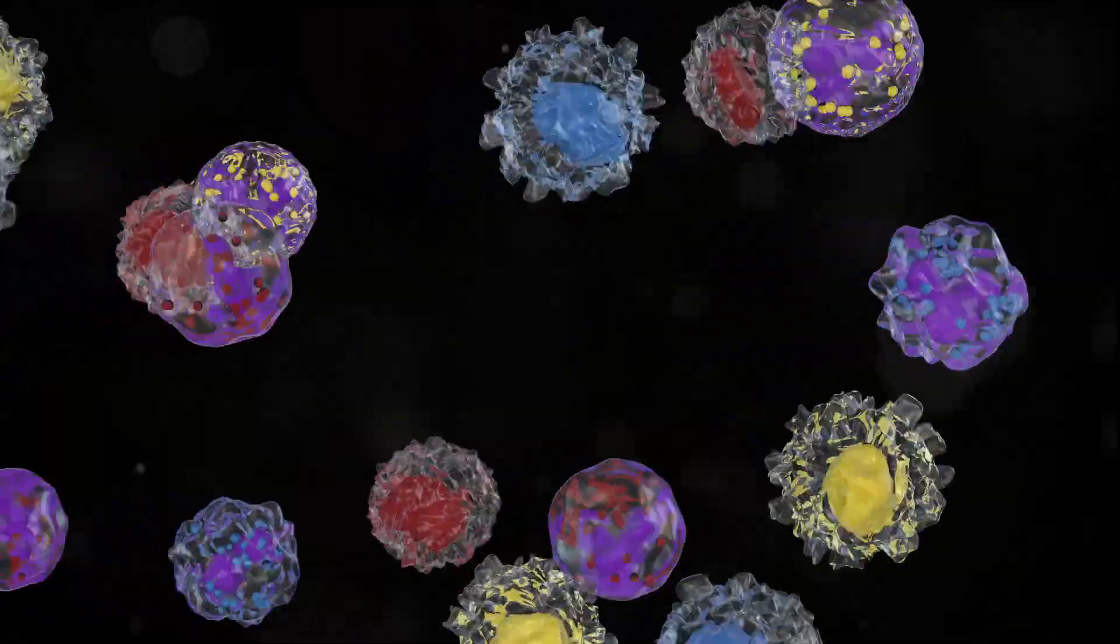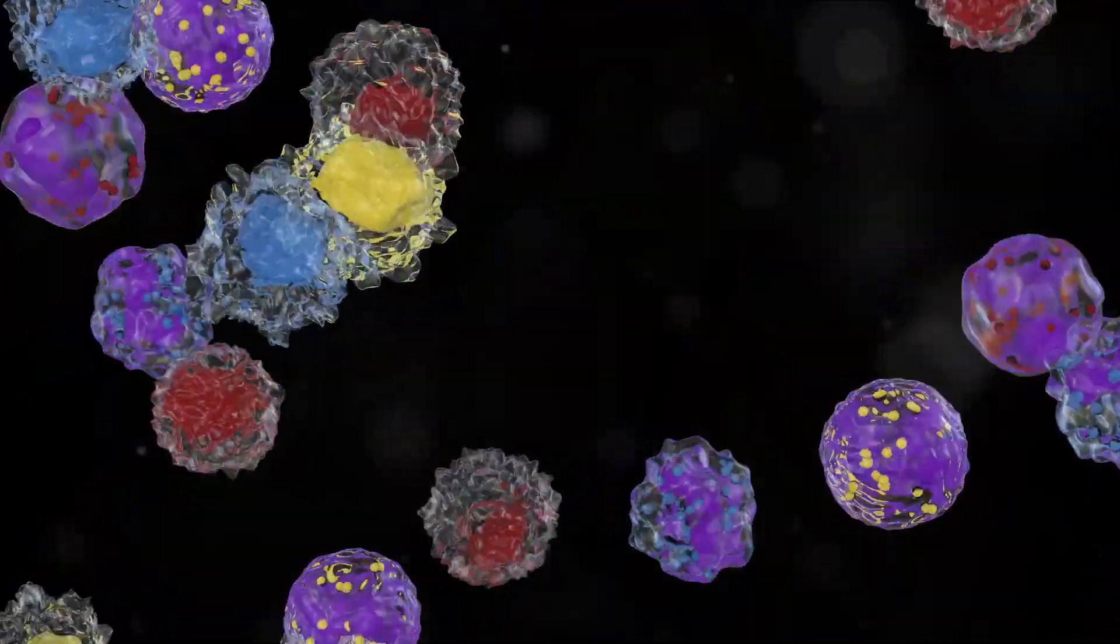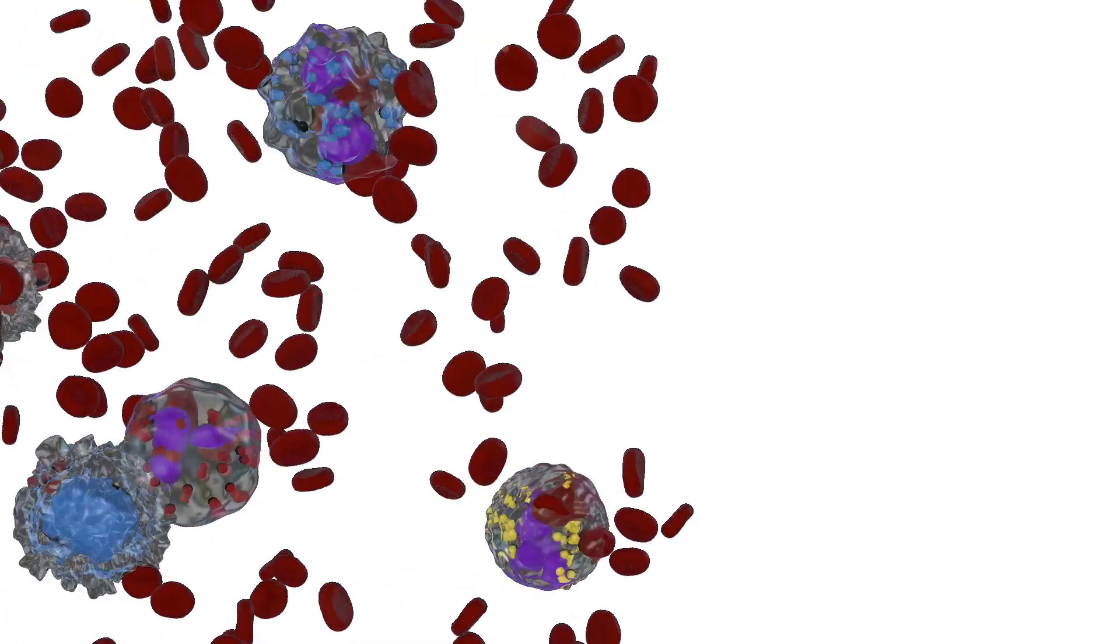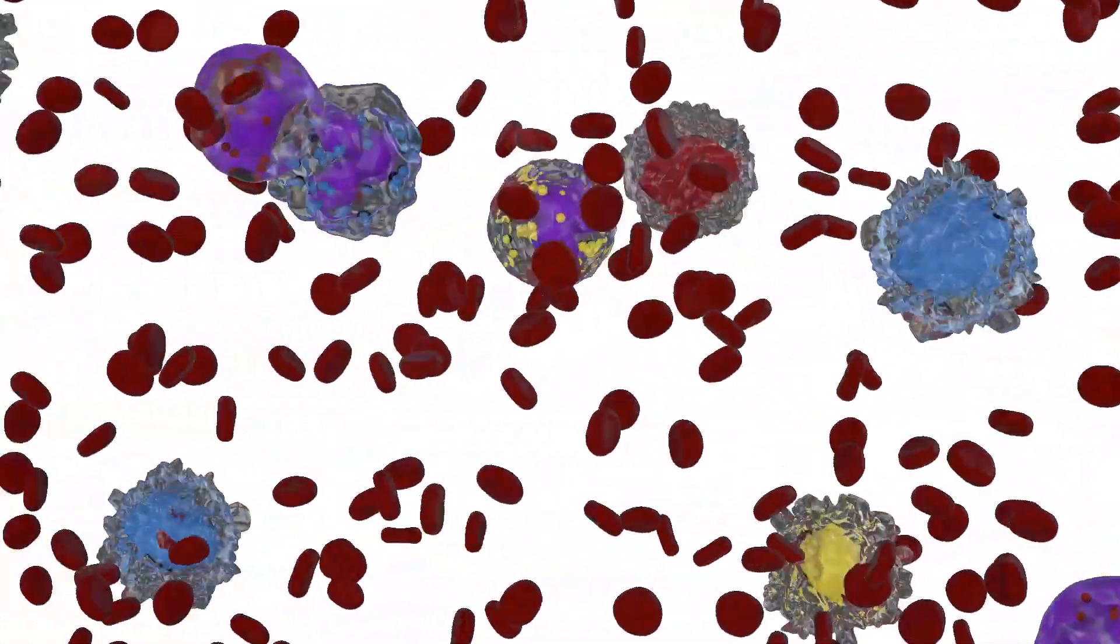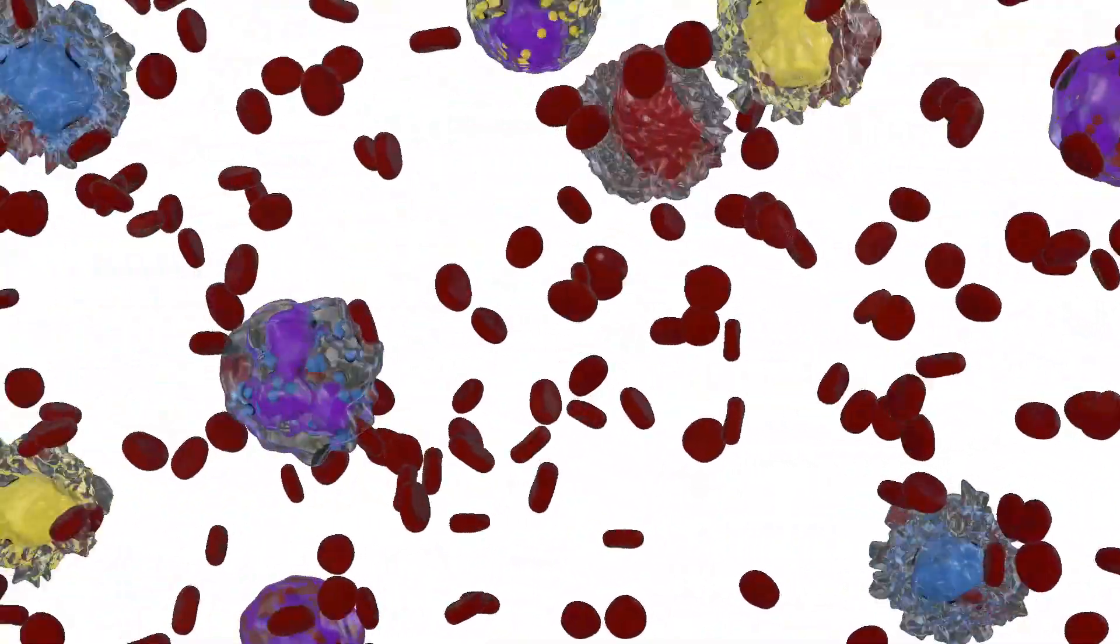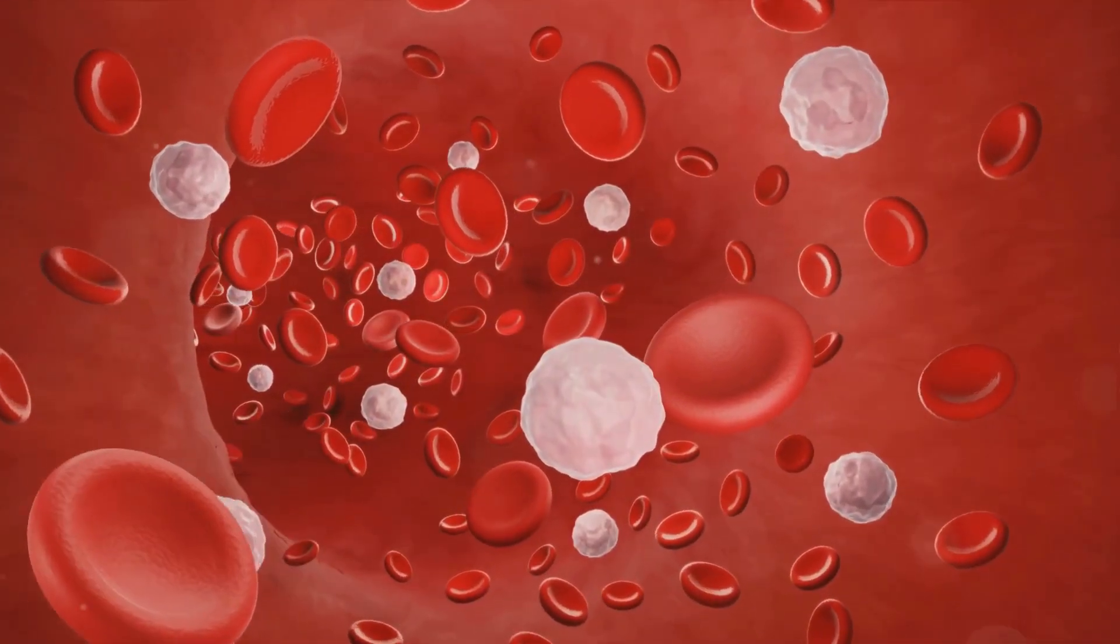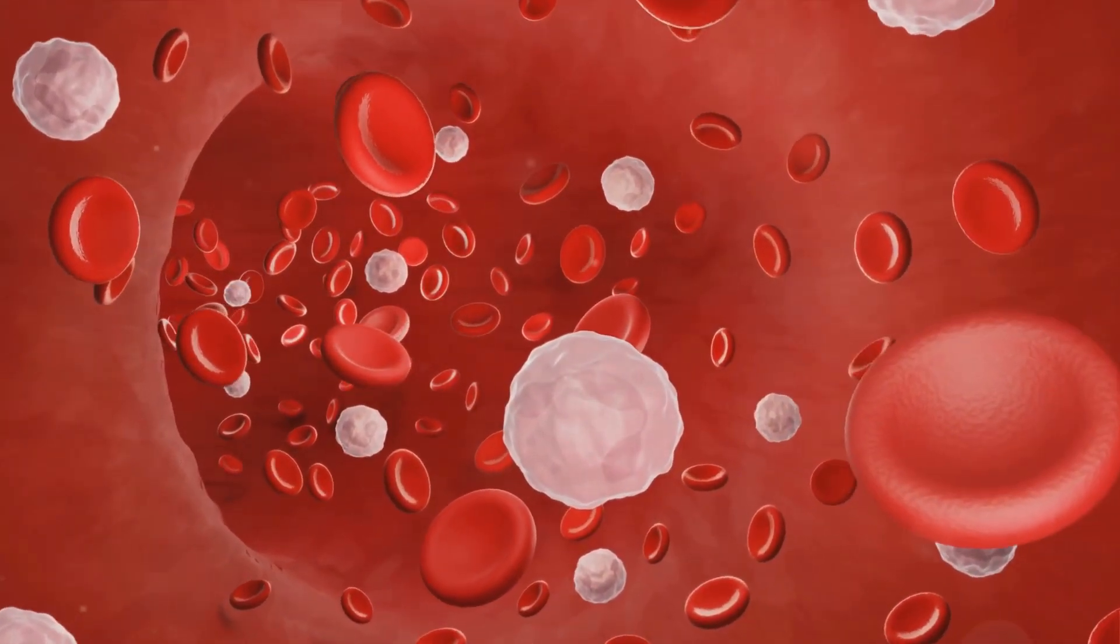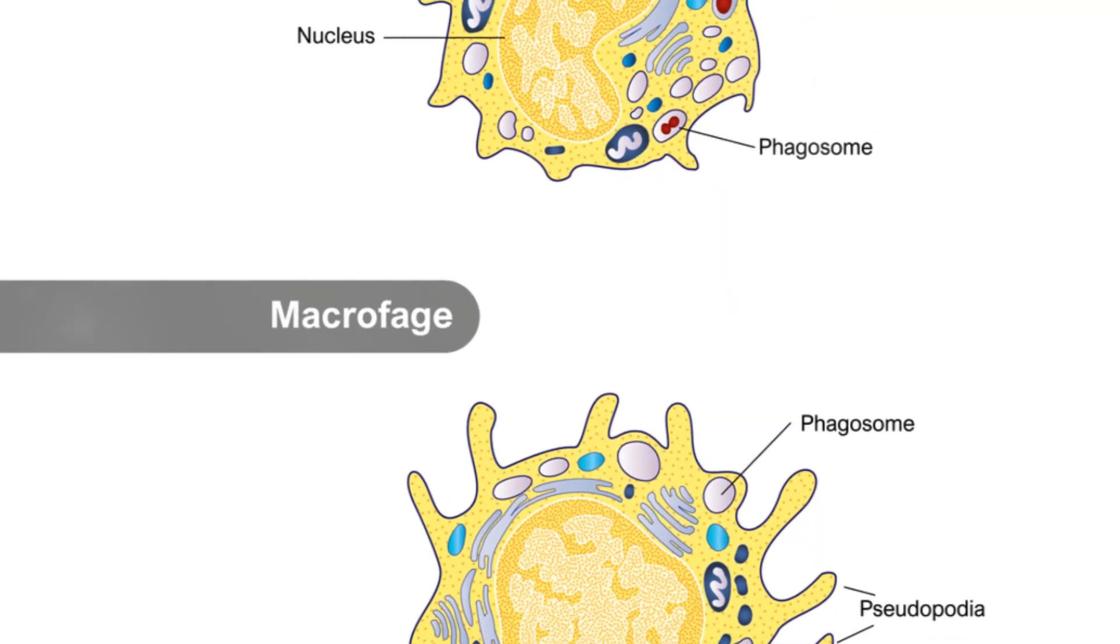Named for the little granules visible under a microscope, these cells have a multi-lobed nucleus, giving them a distinctive appearance. Neutrophils, our body's first responders, possess a multi-lobed nucleus and granules filled with enzymes to neutralize pathogens. Eosinophils contain larger granules, housing proteins lethal to parasites. Lastly, basophils, the rarest of white blood cells, carry granules filled with histamine and heparin, crucial for inflammatory responses.